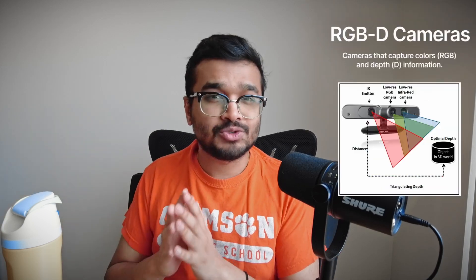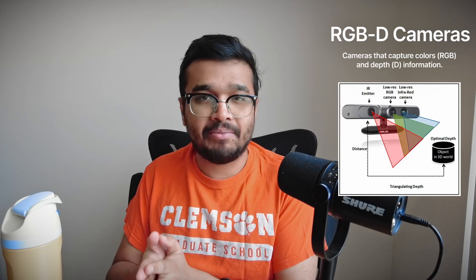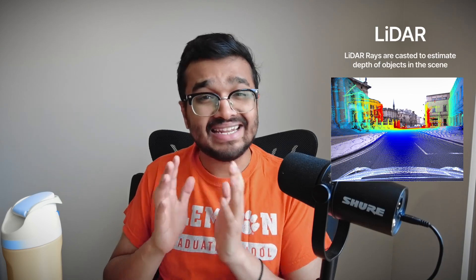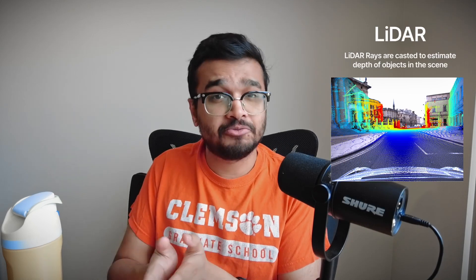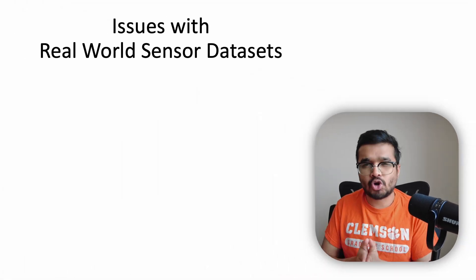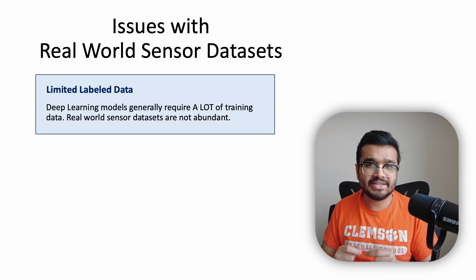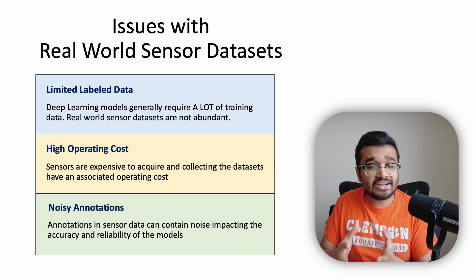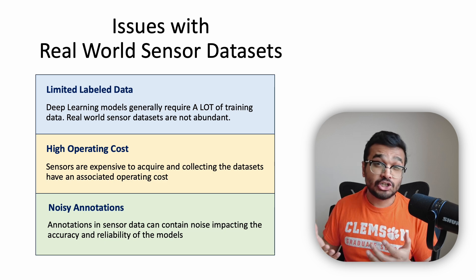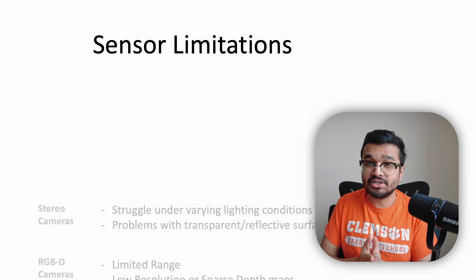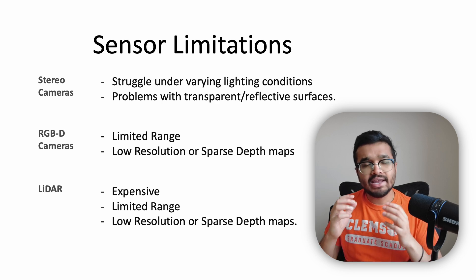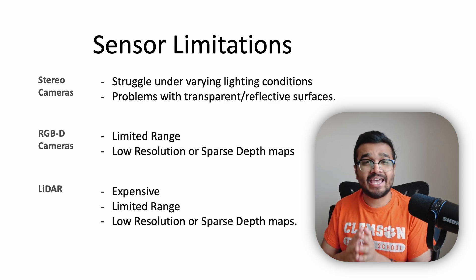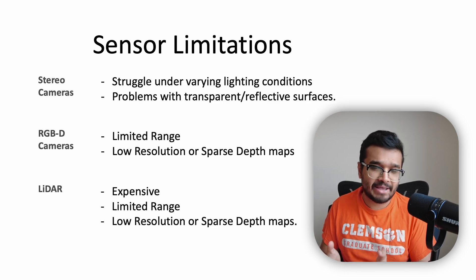The NYU Depth V2 dataset uses RGB-D cameras that also capture depth values along with pixel color values. Some datasets also utilize LIDAR projections where laser beams are projected to capture 3D information about a scene. These methods come with several problems: the amount of labeled data is quite limited due to high operational costs, annotations can be noisy and low resolution, and stereo cameras struggle under various lighting conditions and cannot reliably identify transparent or highly reflective surfaces. LIDAR is expensive, and both LIDAR and RGB-D cameras have limited range and generate low-resolution sparse depth maps.